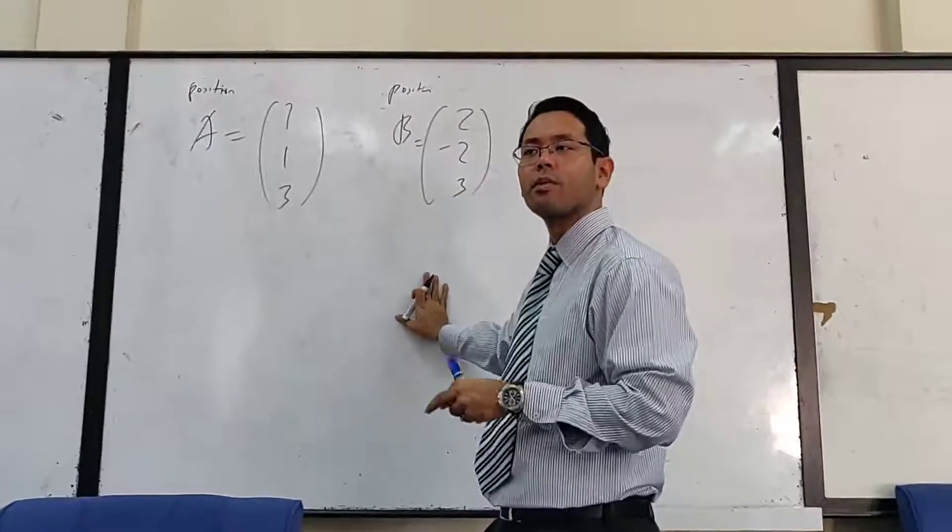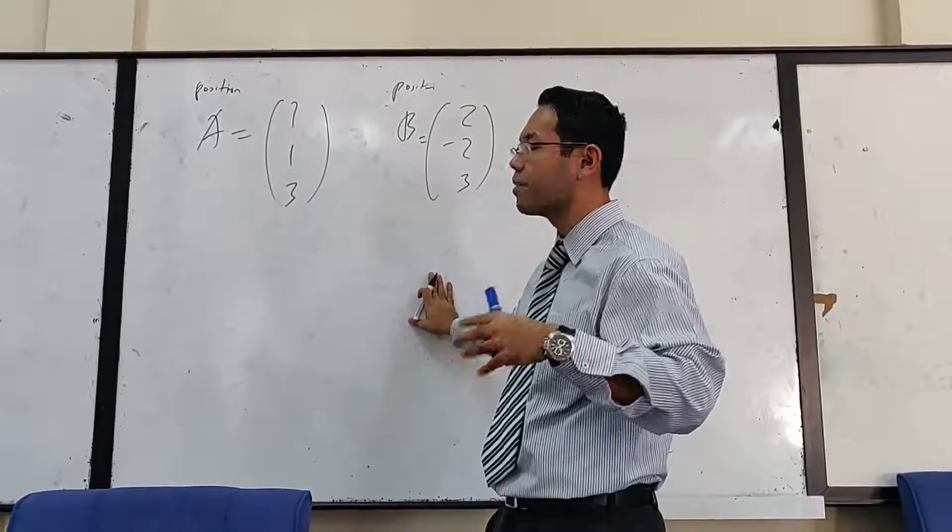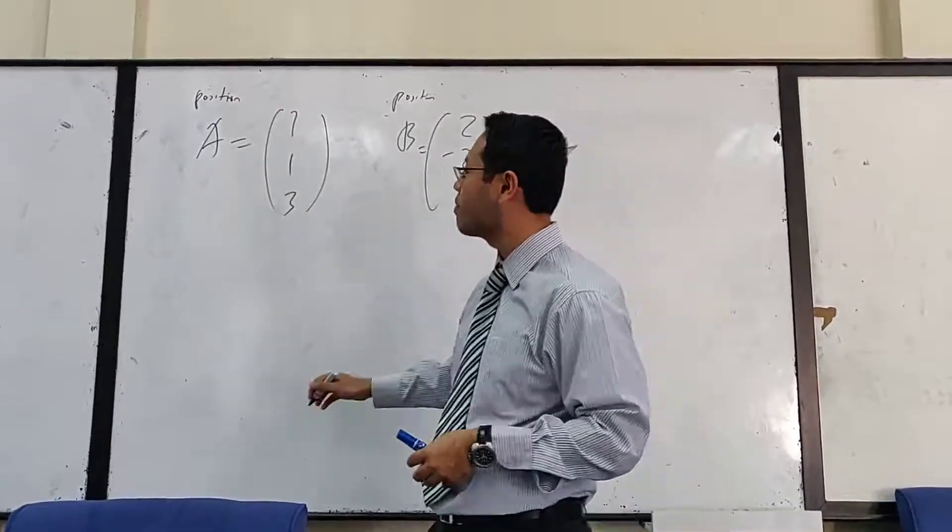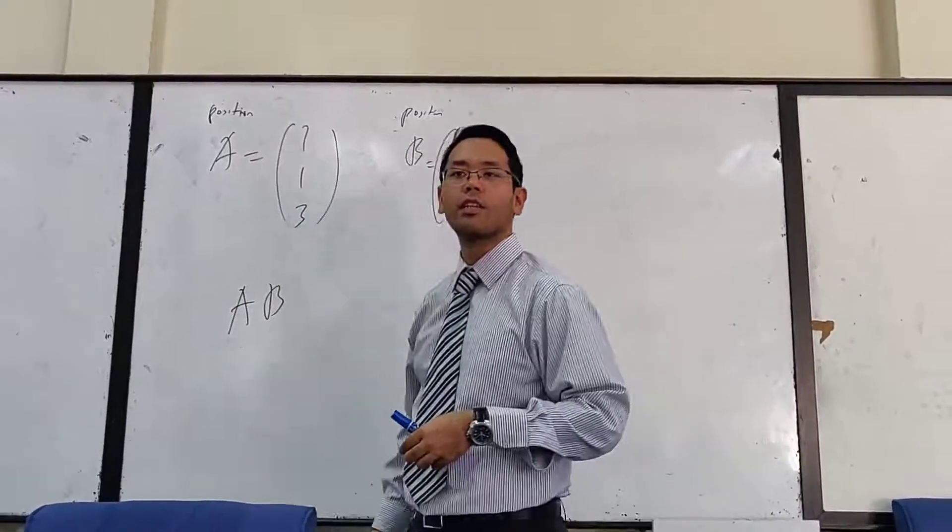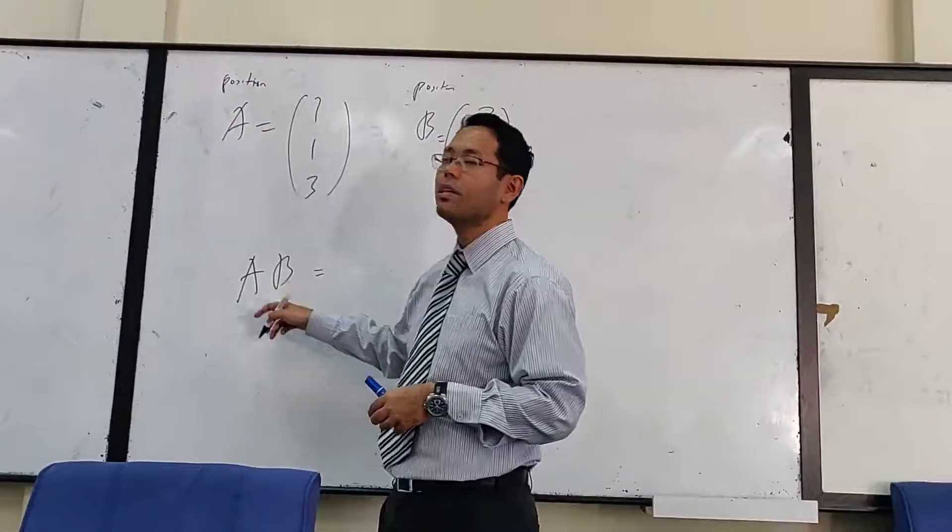Okay, the other day actually I want to be quick. Now, there are several things that I want to clarify. Let's say you're given position vectors A and B, and I want to find AB.